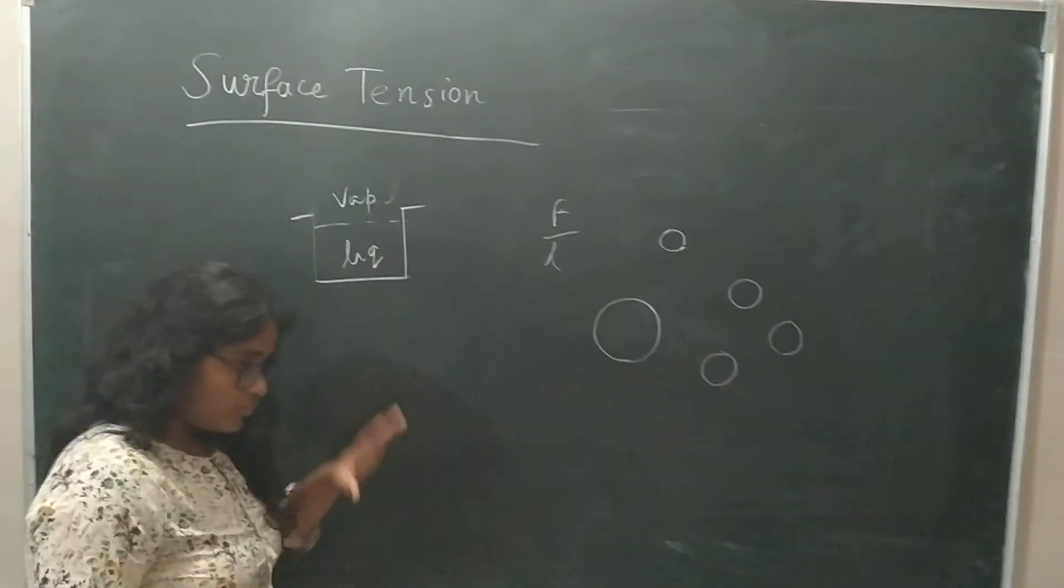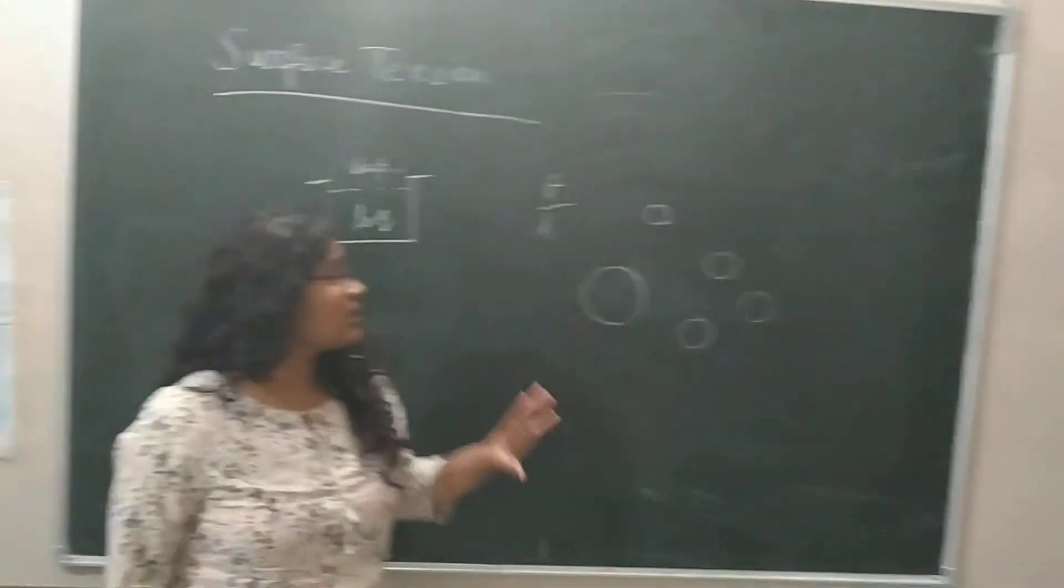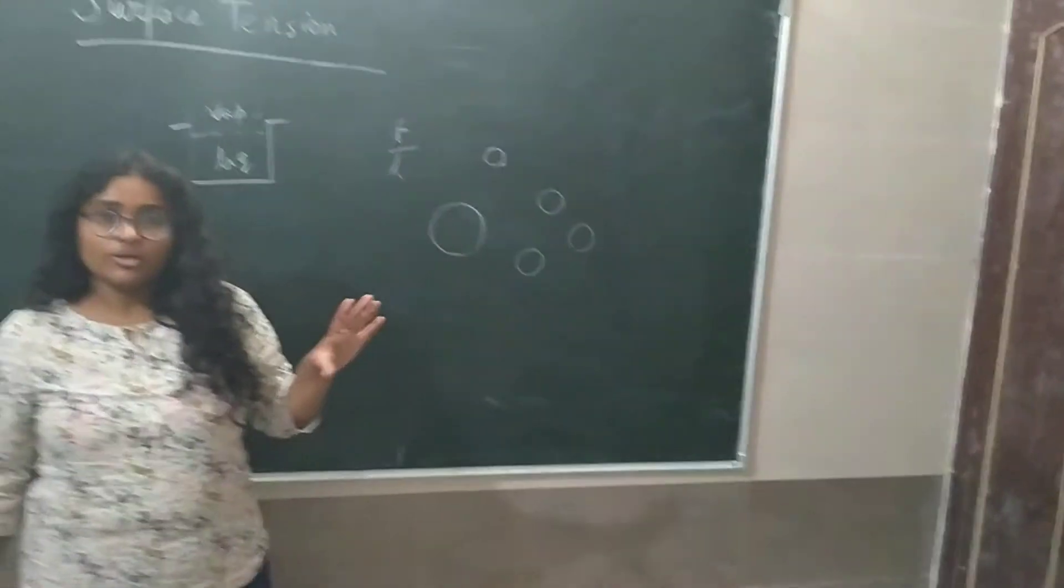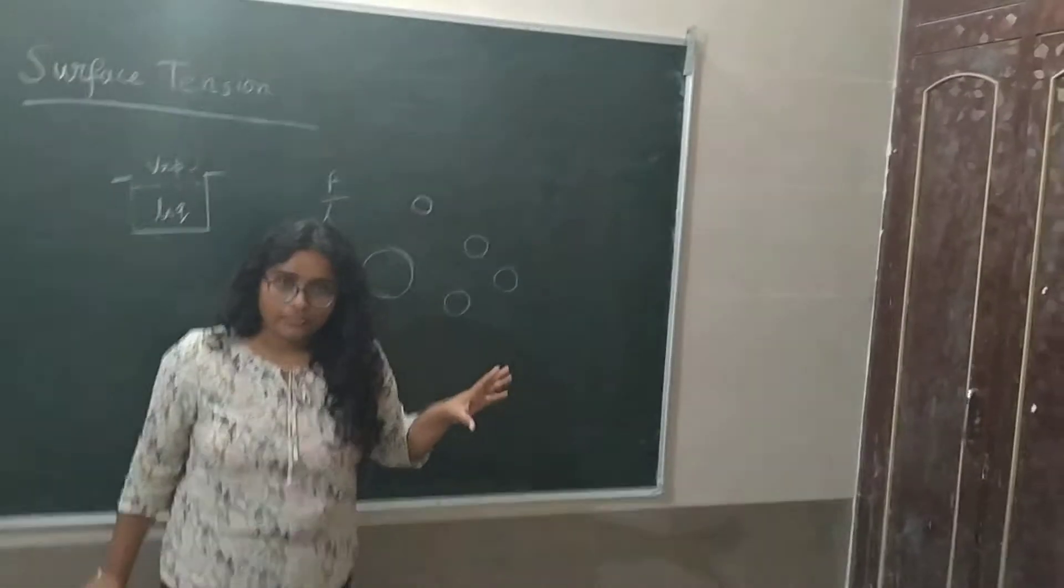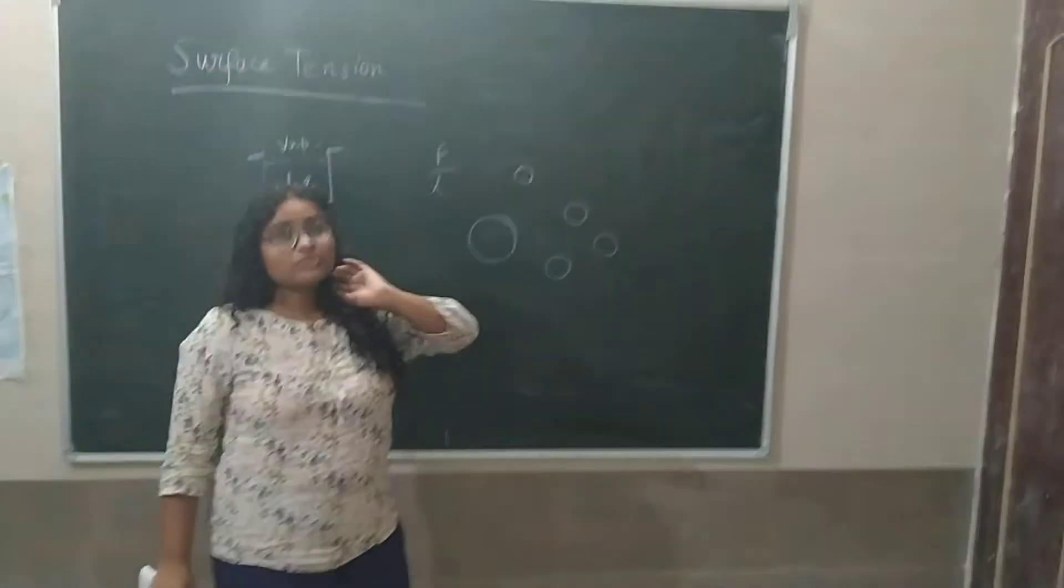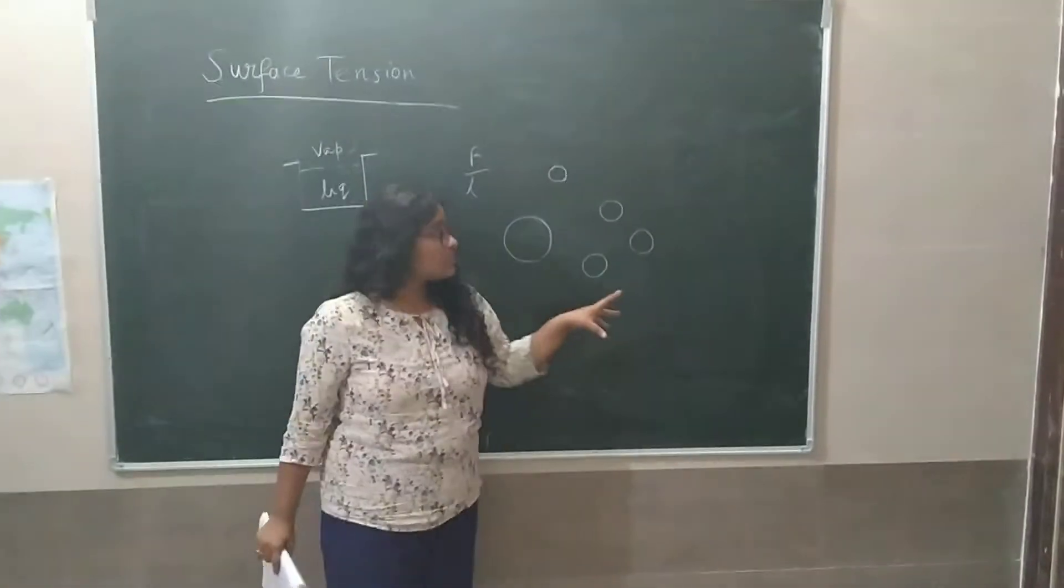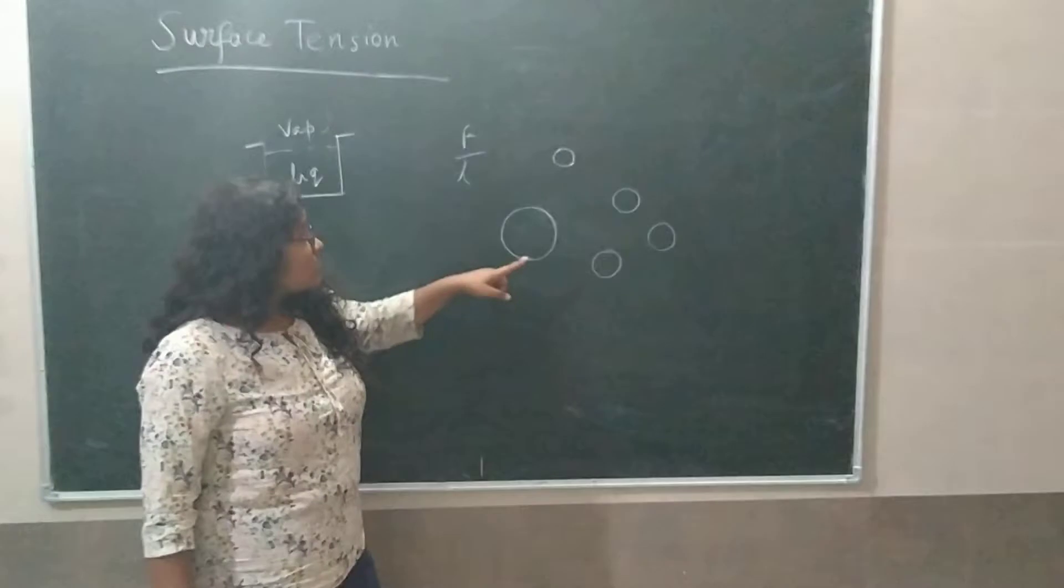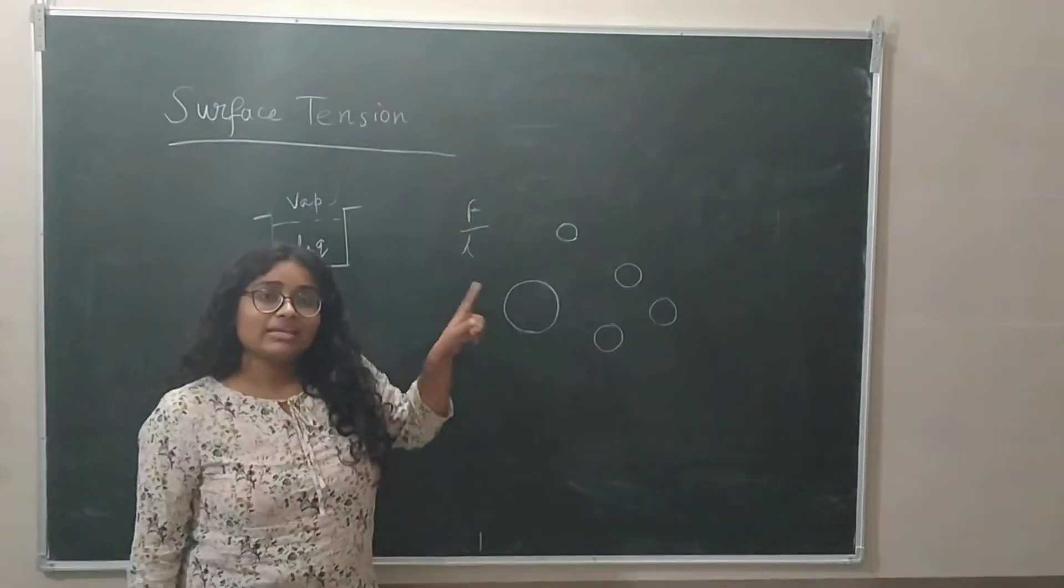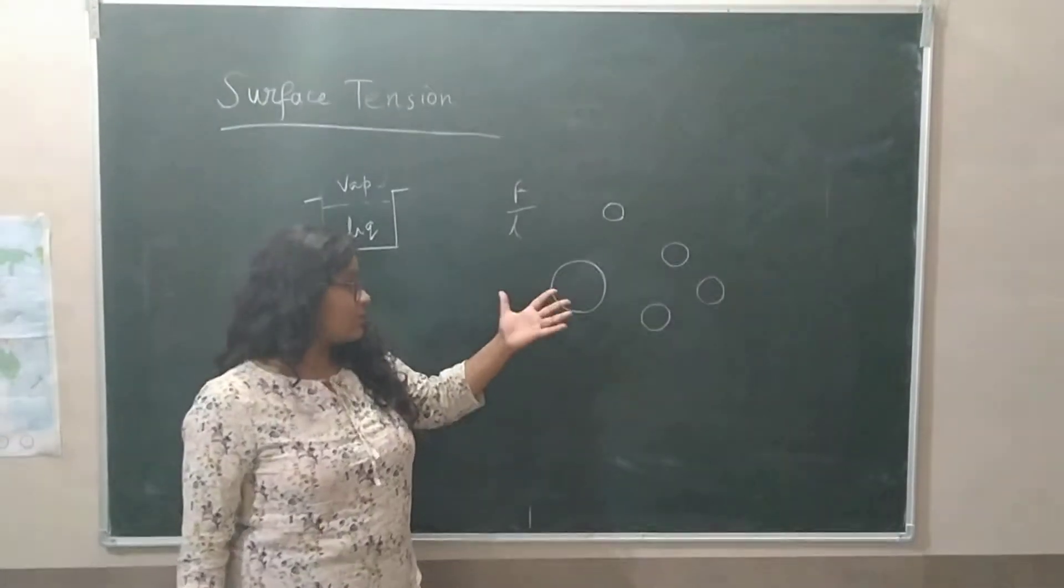First of all, we know that each object, the natural thing, natural state of an object to be in equilibrium, to be in its equilibrium state. So each object will try to be in its natural position. So what if I tell you that the spherical shape is exactly the equilibrium state of nature.